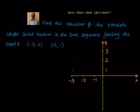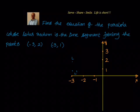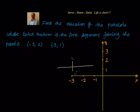These two points are nothing but L and L', the line segment which is making the latus rectum of the parabola. Since L and L' form a vertical line, we know that the latus rectum is always perpendicular to the axis of the parabola. That means our axis of parabola will be a horizontal line, and automatically the directrix will also be a vertical line.